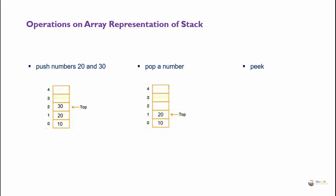Peak operation is used to return the value which is present in top. So it will return the value 20, which is the value pointed by top currently.